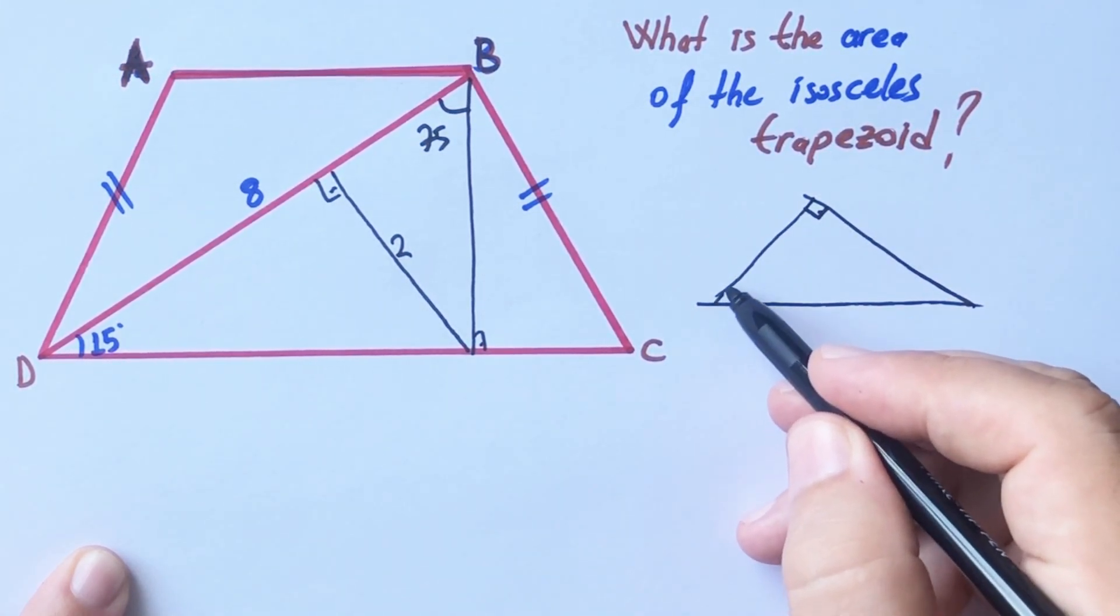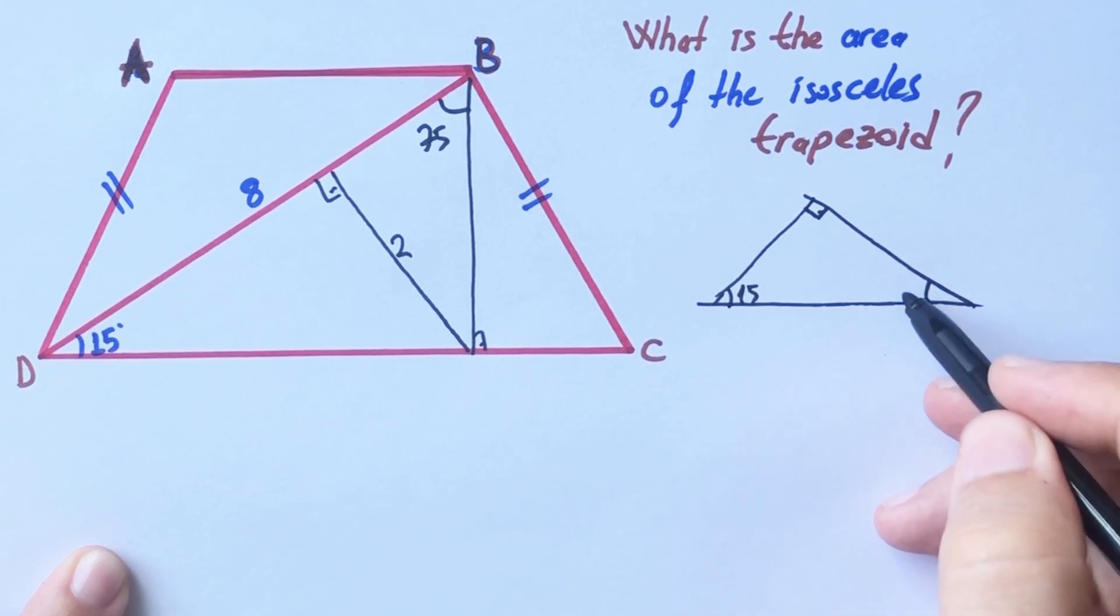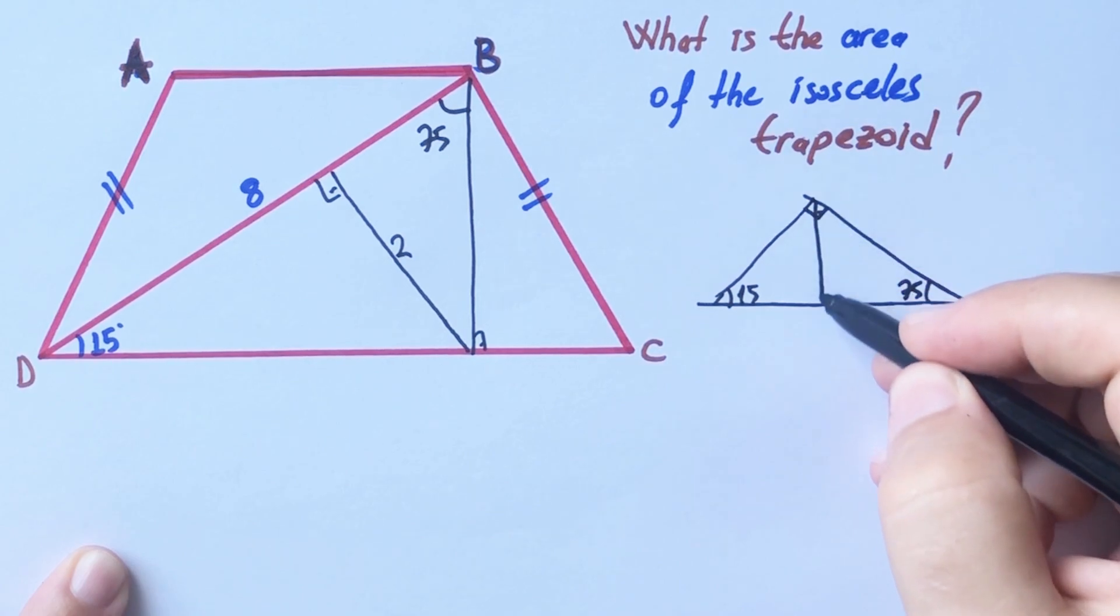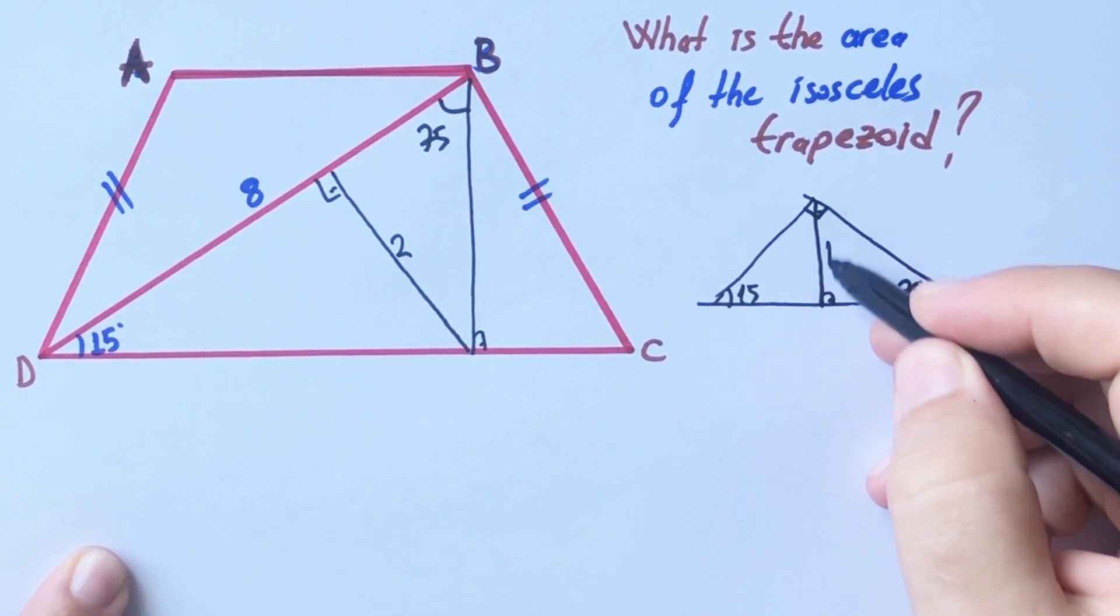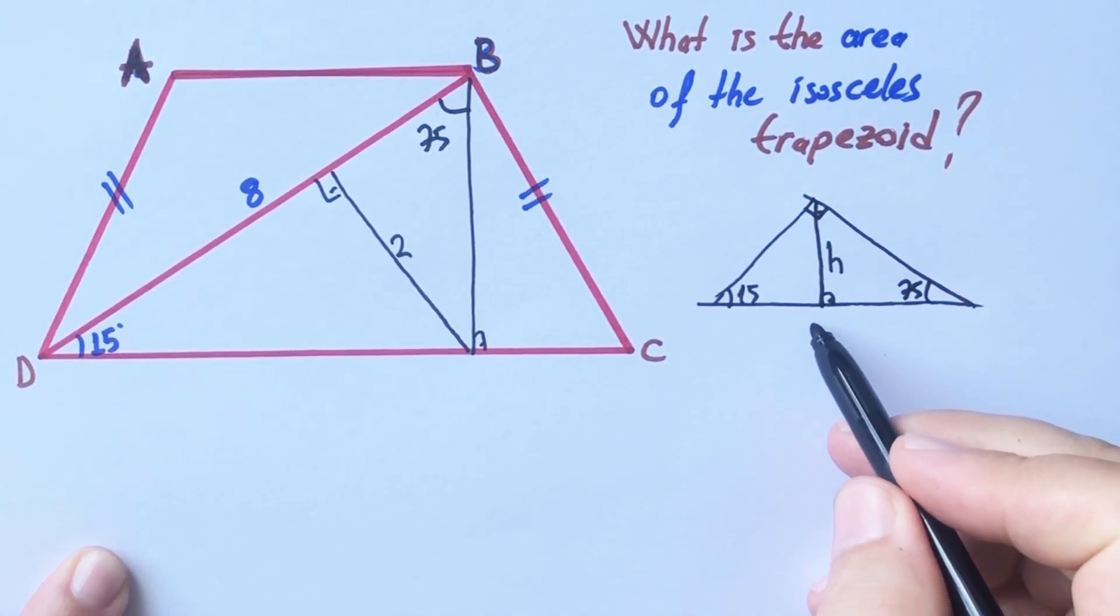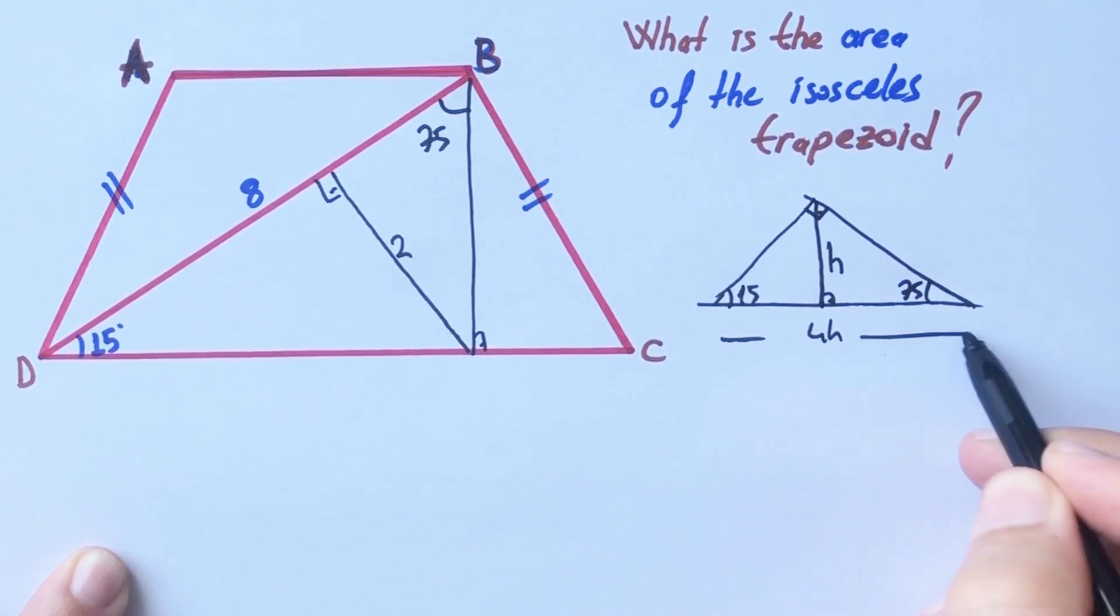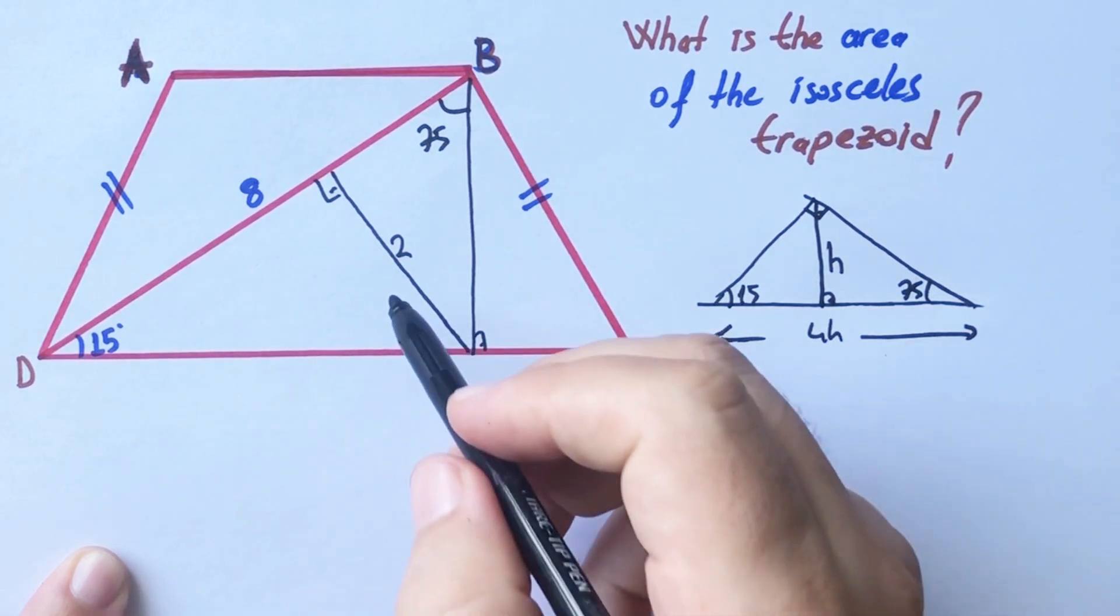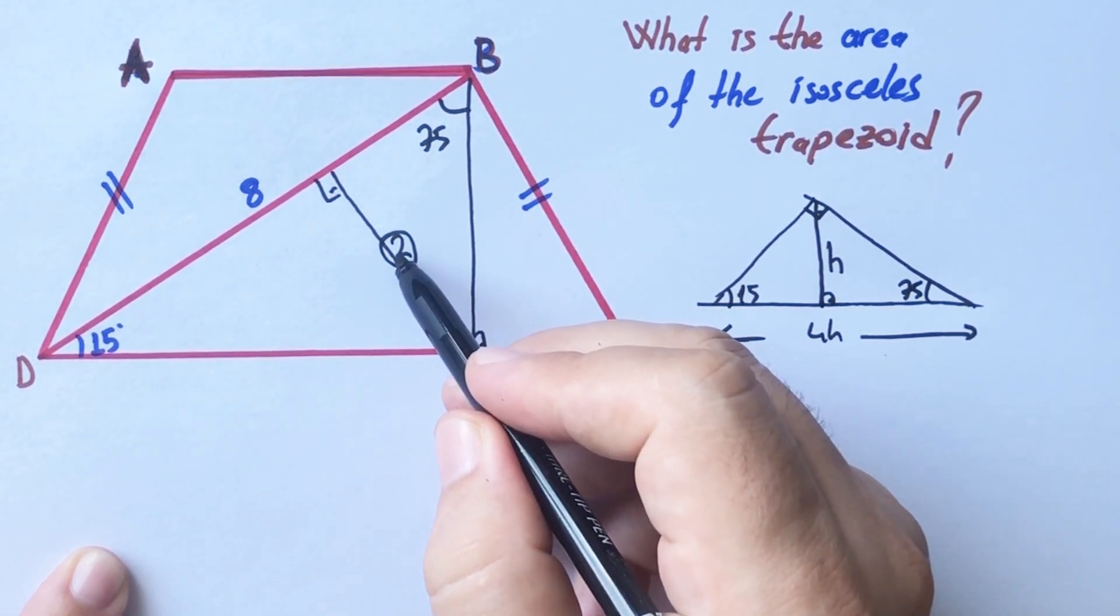Let's remind you, if we have a right triangle and the base angles are 15 and 75 degrees, the ratio of base and height must be 4 to 1. So here must be 2 units.